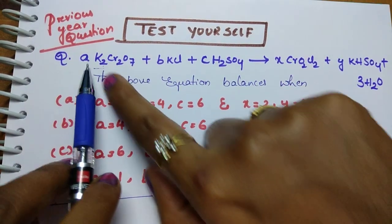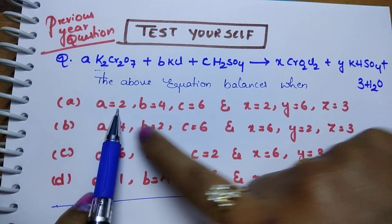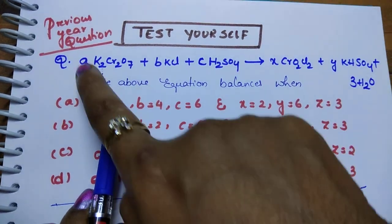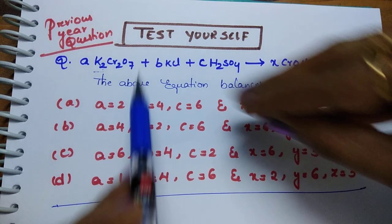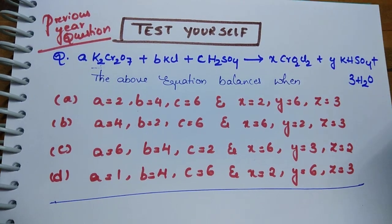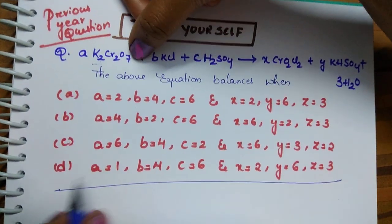Without converting ionic form also you can do. Suppose K2Cr2O7, if a is 2, then where is another K? Here K is there. Just try to substitute this, otherwise just convert into ionic form.